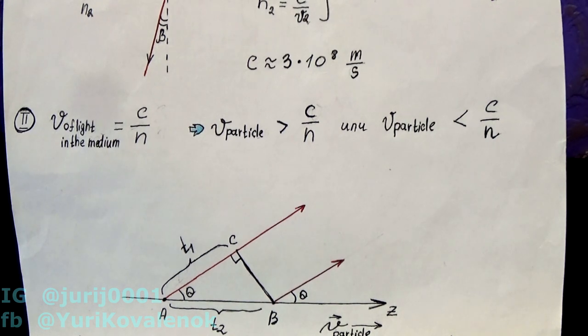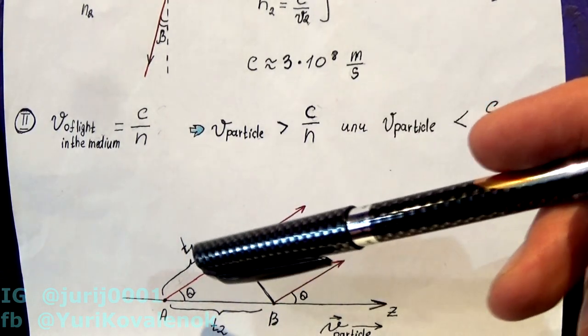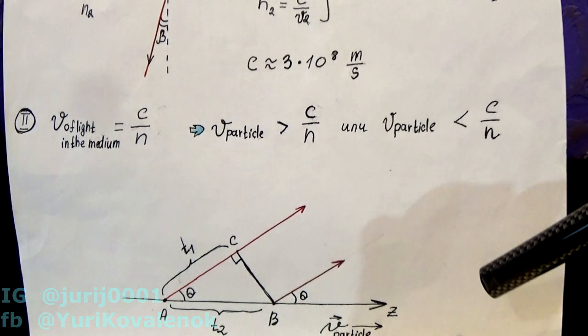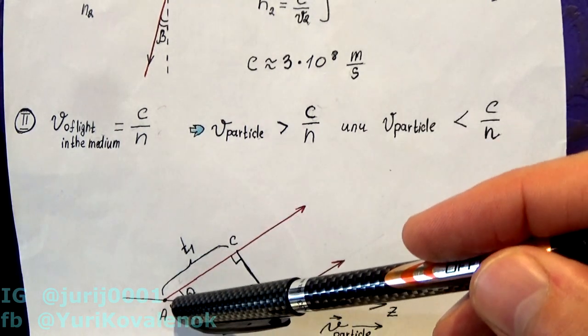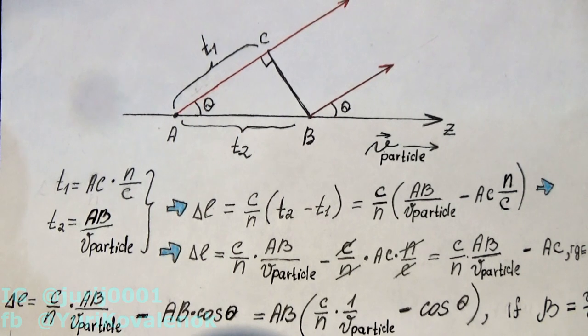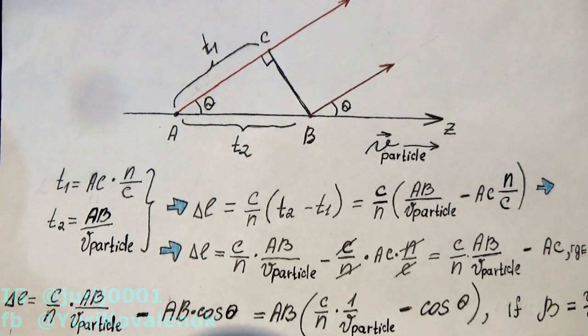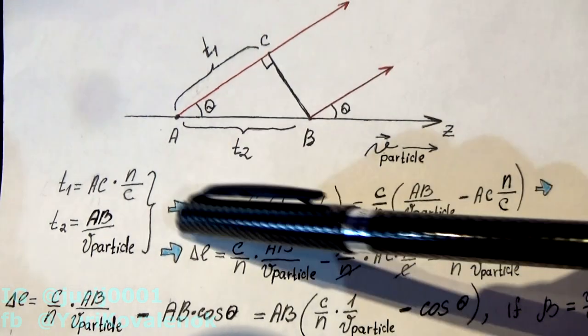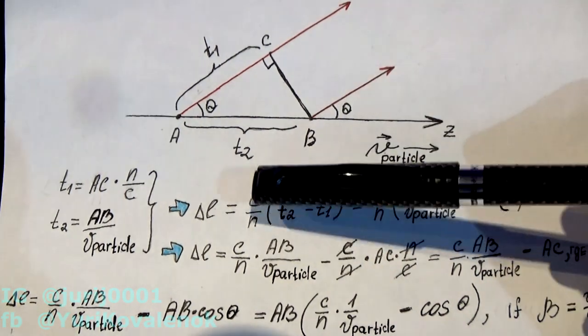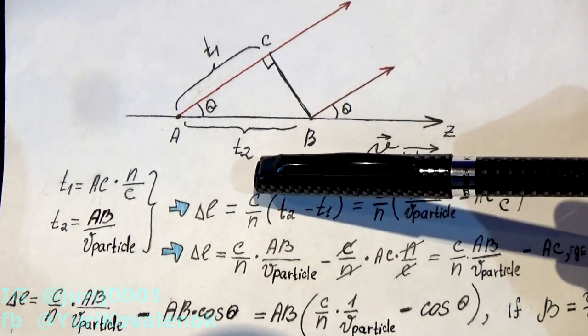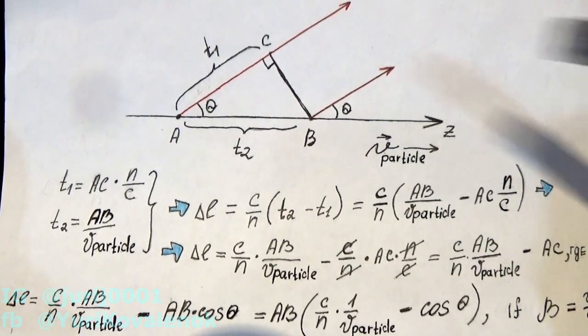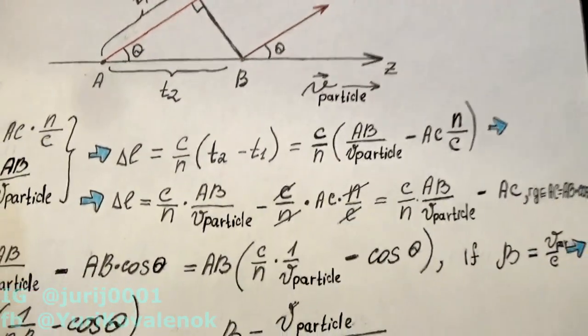Let's try to prove this taking into account the fact that a charged particle at each point of its trajectory emits electromagnetic waves in the medium. Suppose that the particle moves along the z-axis. First it was at point A and then at point B. Let's find the stroke difference of delta L. The stroke difference will be determined by this expression. C divided by n is the speed of light in a given medium. By simple mathematical transformation you will get this formula.